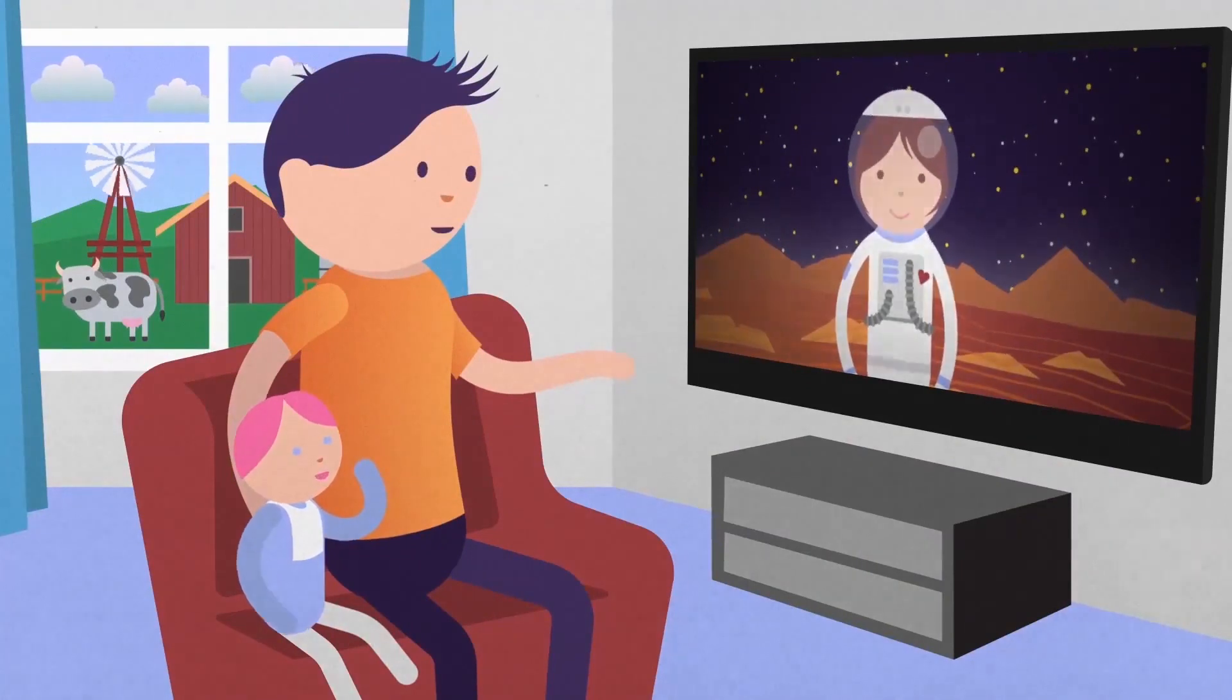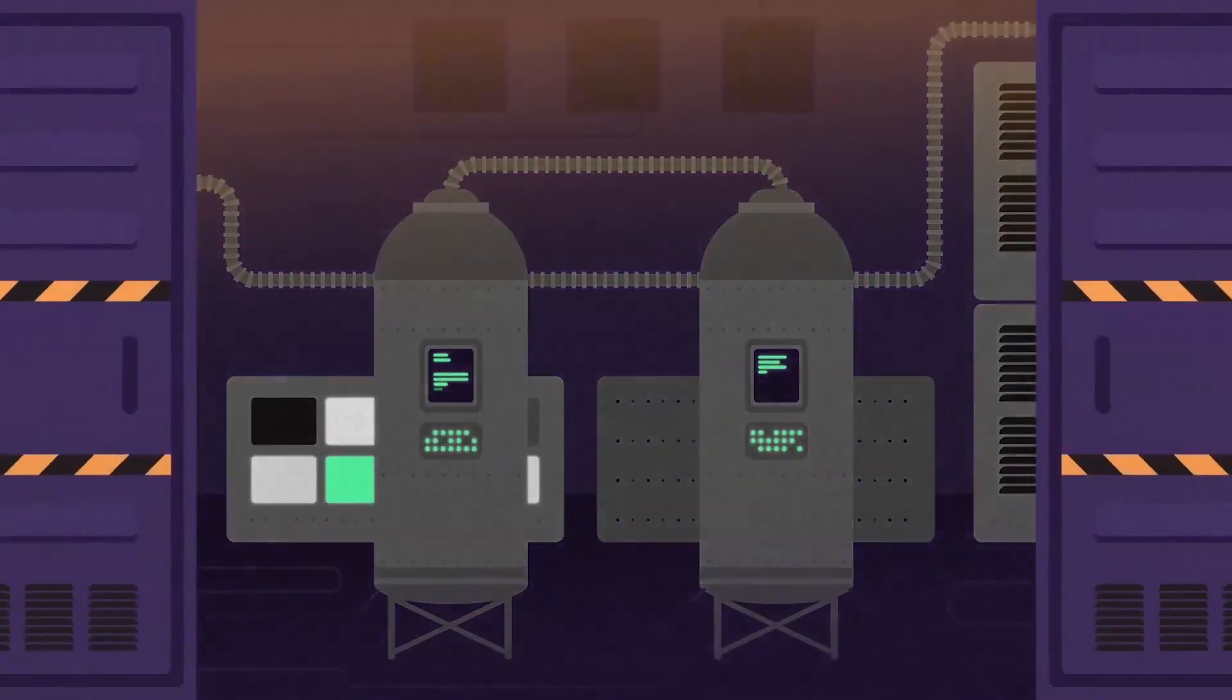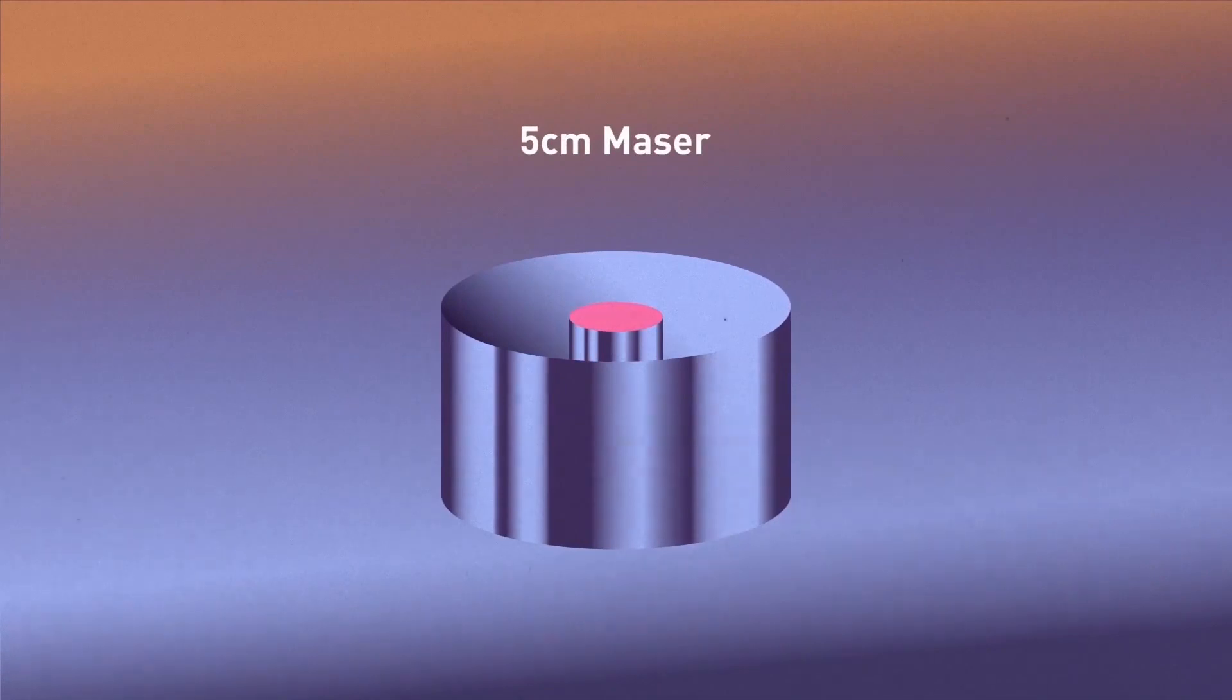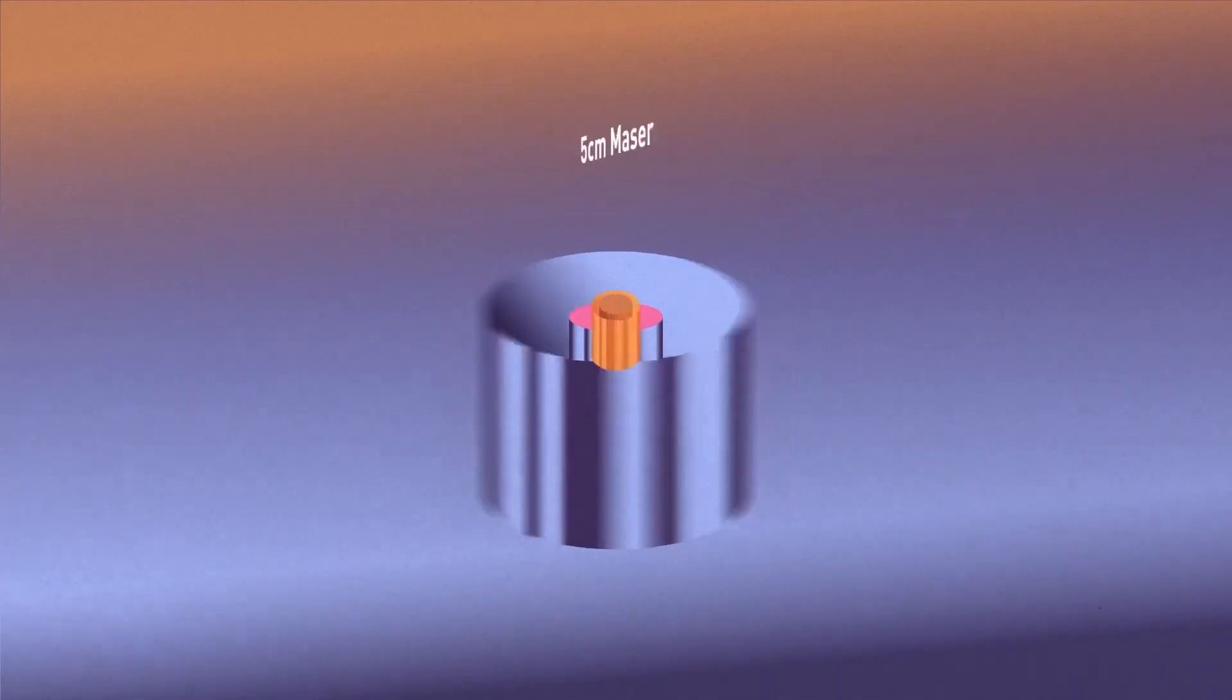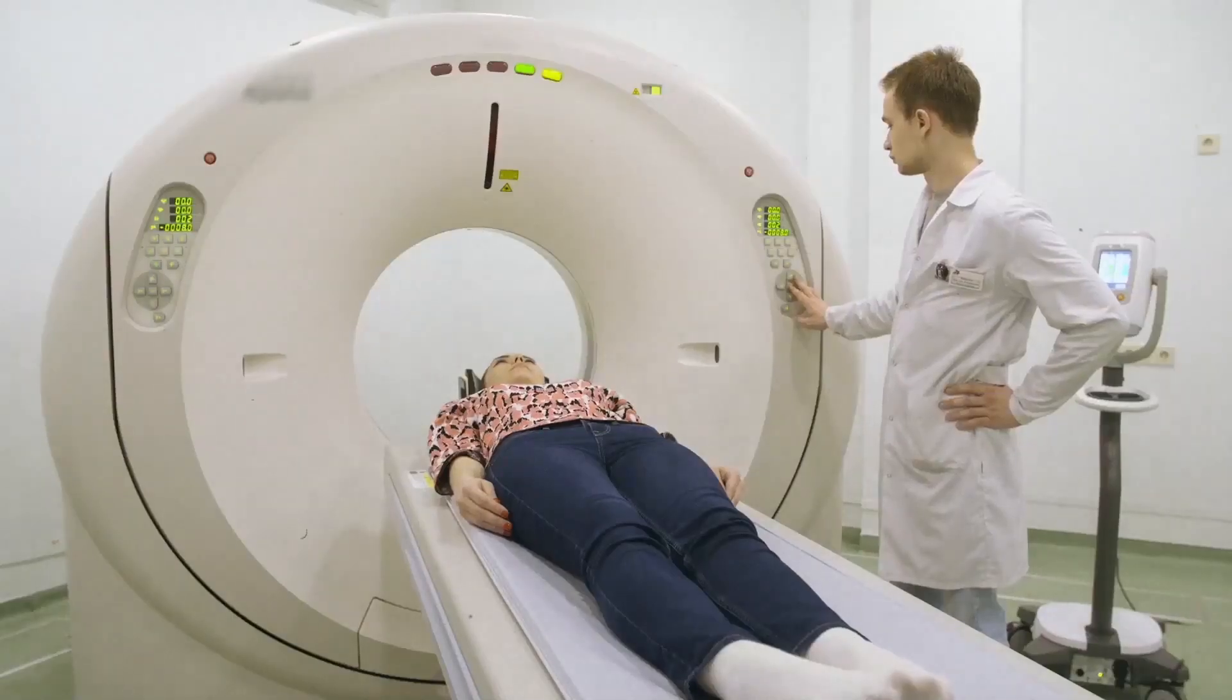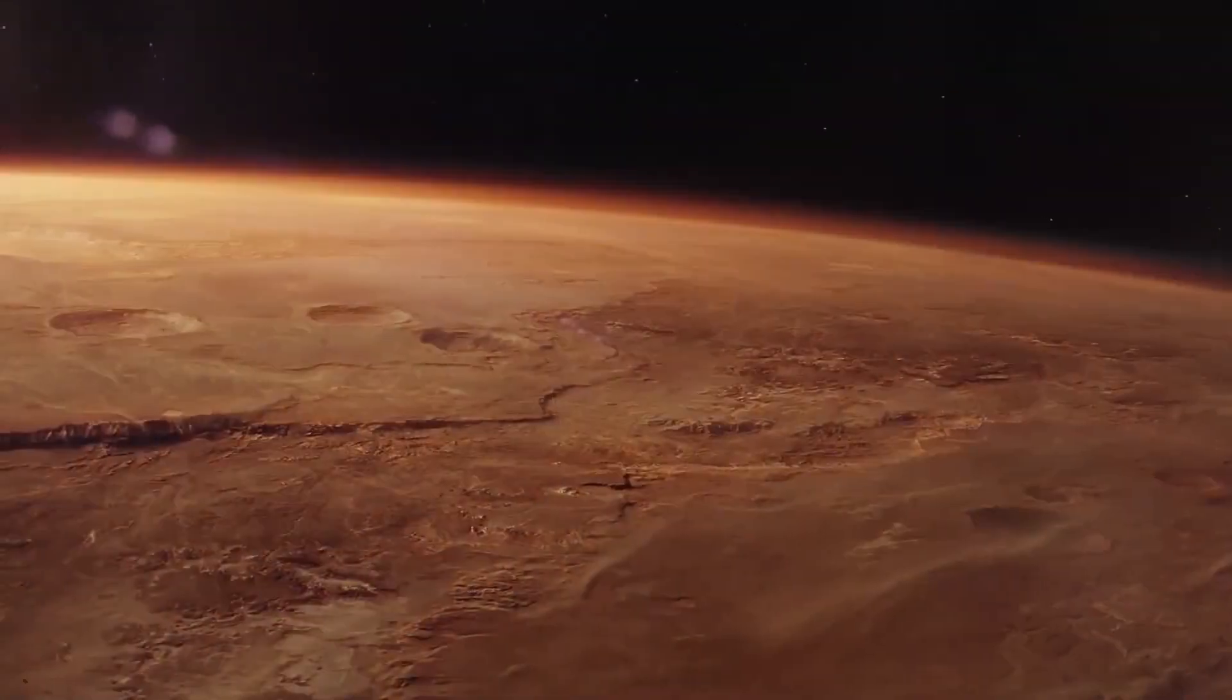Now our astronaut can happily call her family, and all is well. But the real problem is that masers are bulky, requiring large equipment and refrigerated rooms. But thanks to research from Imperial College and UCL, they developed a solid-state maser able to operate at room temperature. By making the masers small enough, we can integrate it with other technology and dream of new applications.